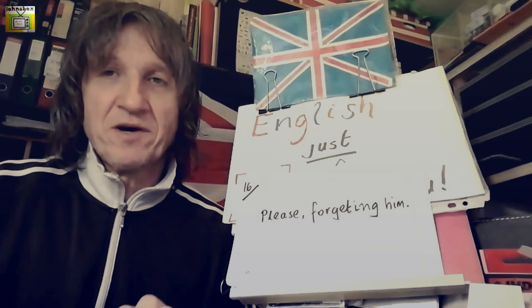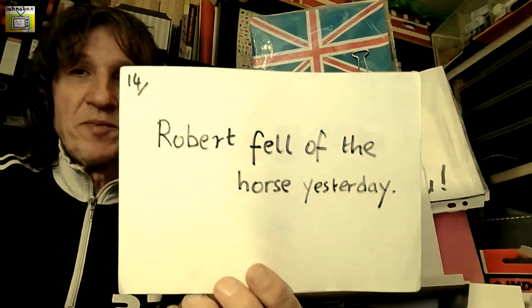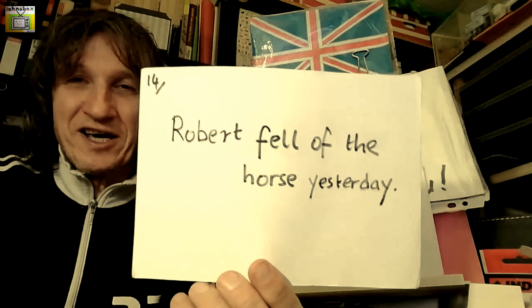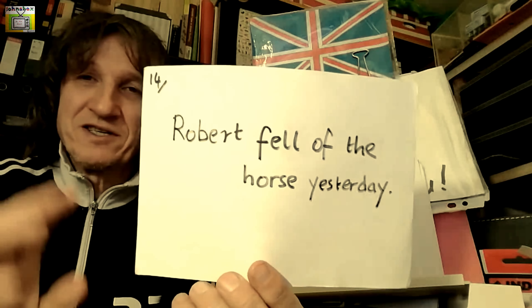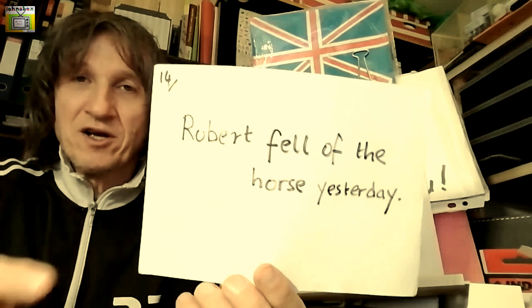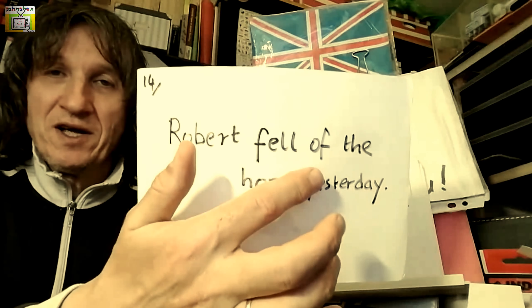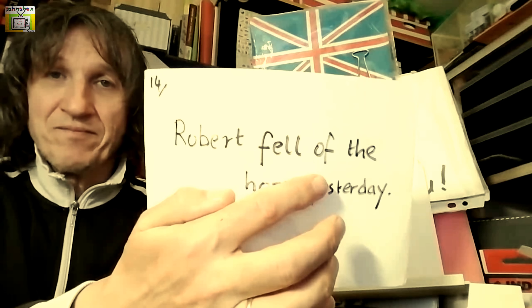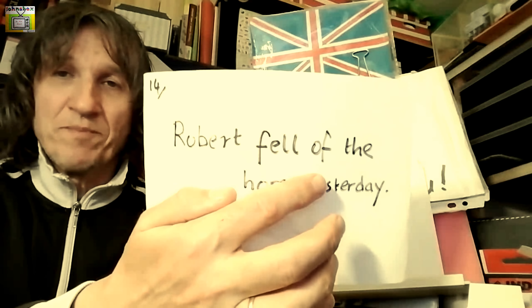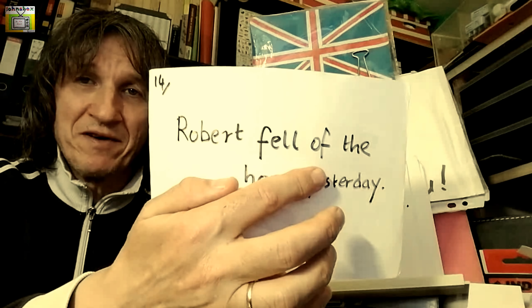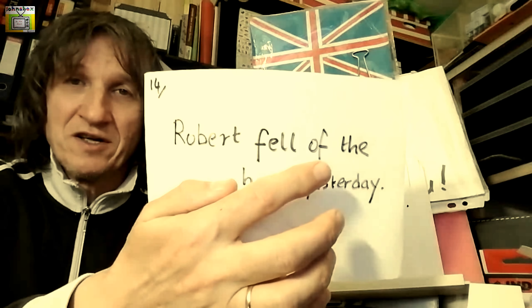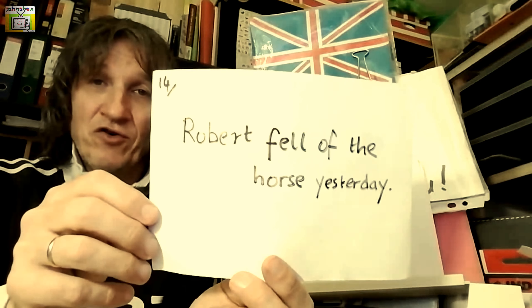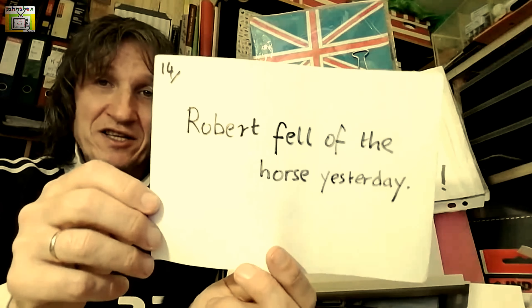Sentence number five — we're coming up to the halfway stage. 'Robert fell of the horse yesterday.' Now 'of' links two nouns, for example 'level of production', and is not what we call a particle in English. The particle should be spelled with a double F. Therefore the correct answer is: 'Robert fell off the horse yesterday.' That's sentence number five.